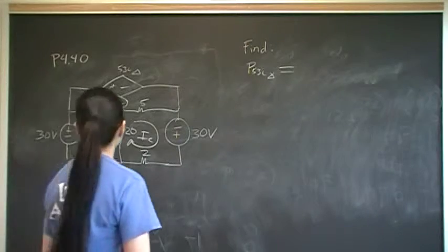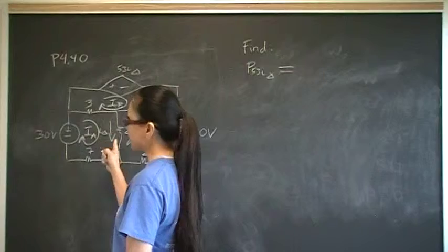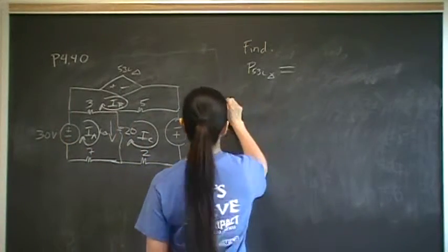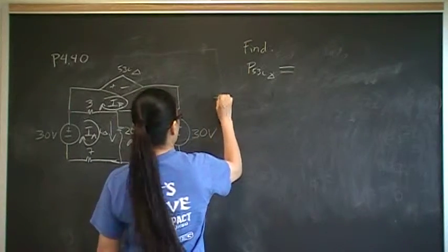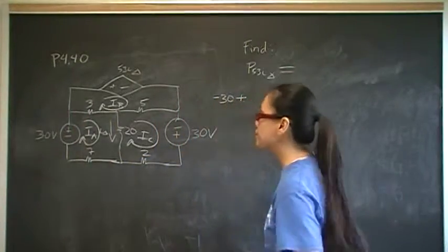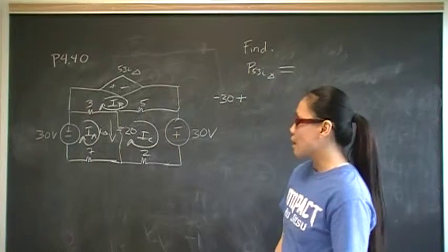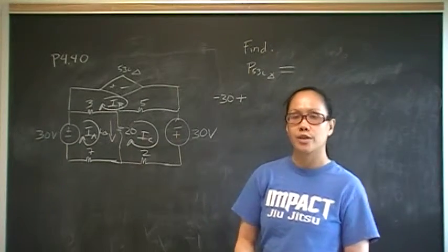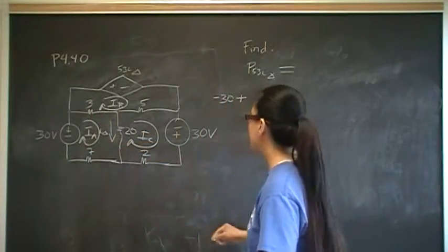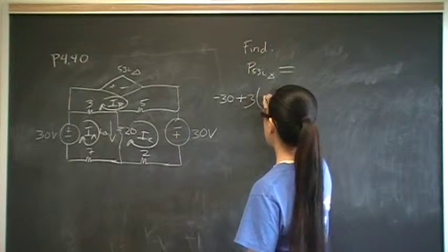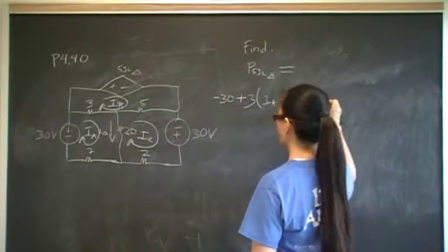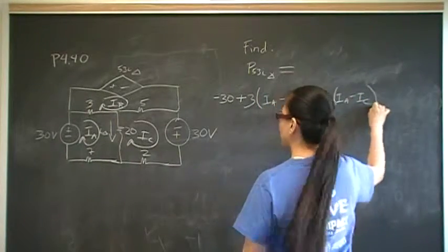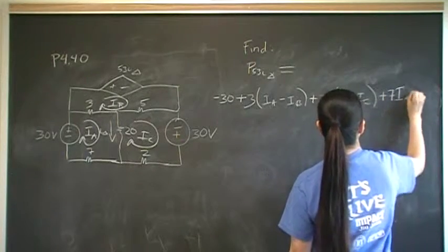Let's start with mesh Ia. I've defined the current to be in the clockwise direction, so positive Ia. The first terminal it enters is a negative terminal, so that gives us negative 30. The next voltage drop across the 3 ohm resistor is 3 times the net current Ia minus Ib. Then across the 20 ohm resistor it's 20 times Ia minus Ic. And the final voltage drop is across the 7 ohm resistor: 7 Ia. All equal to zero.